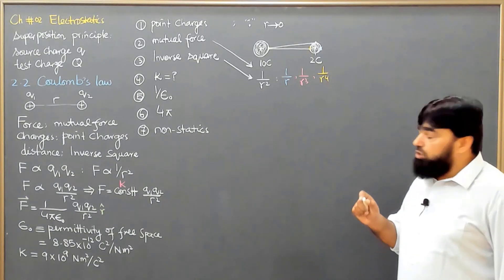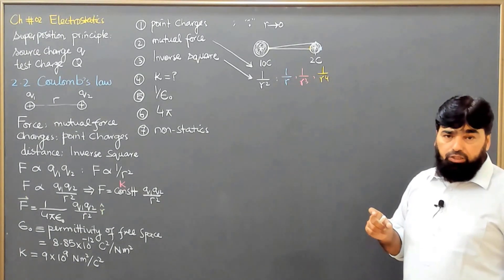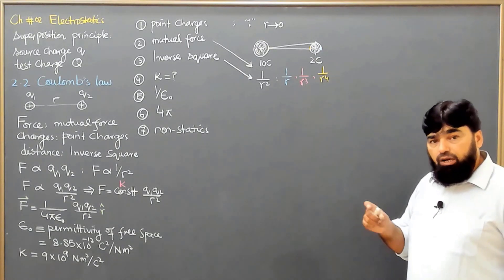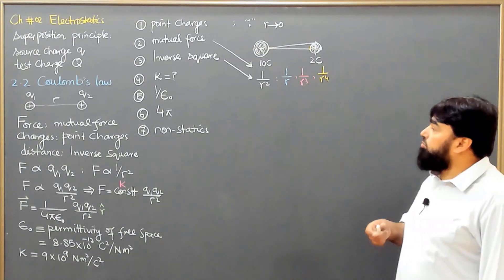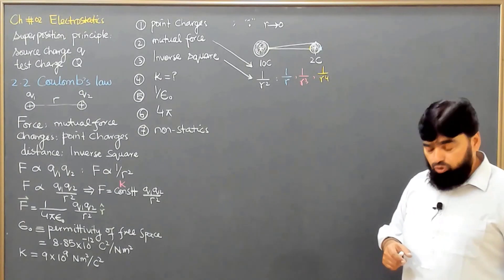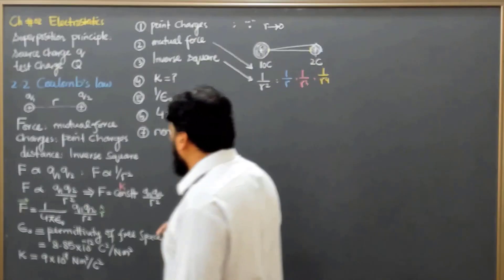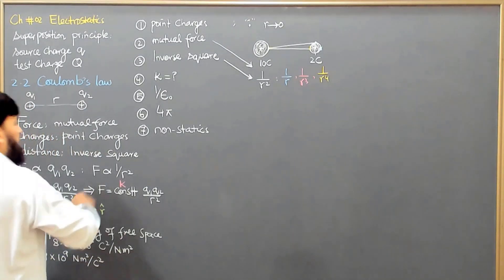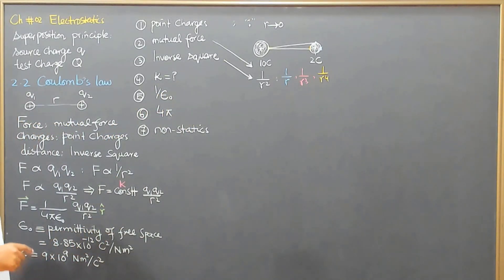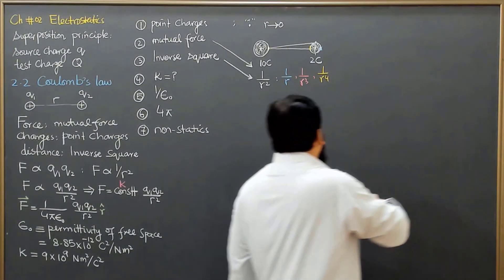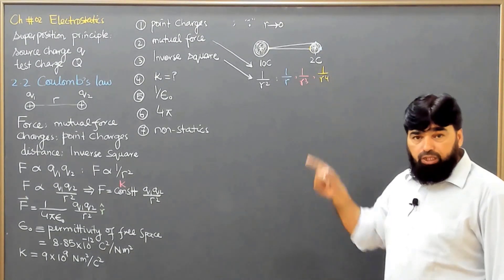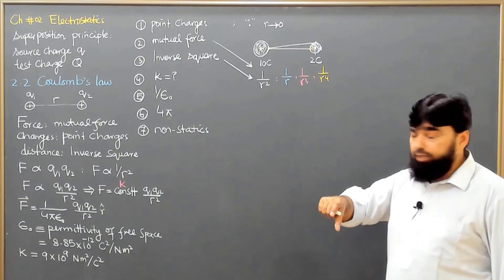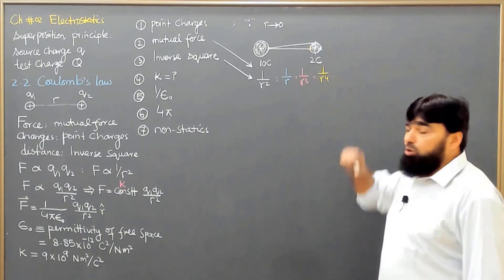It depends on the geometry of the charges — how the charges are arranged and how many charges there are for which we are finding the interaction force. For example, if we have one charge interacting with another charge, then it is an inverse square relation. But if we have a quadrupole — meaning two dipoles combined — then it will be 1 over r⁴.